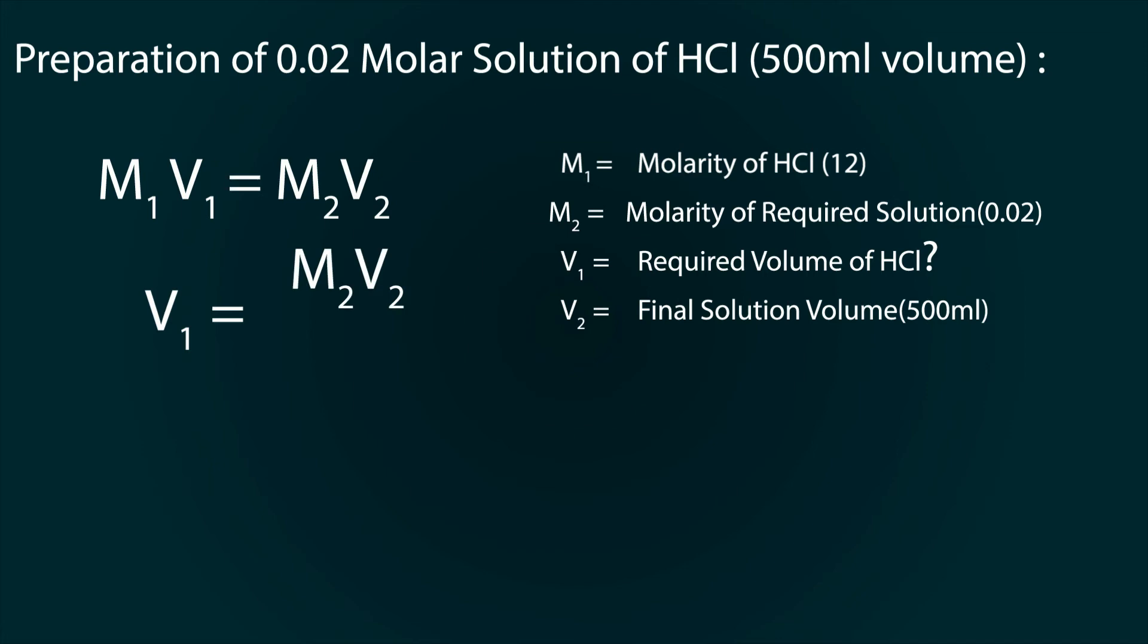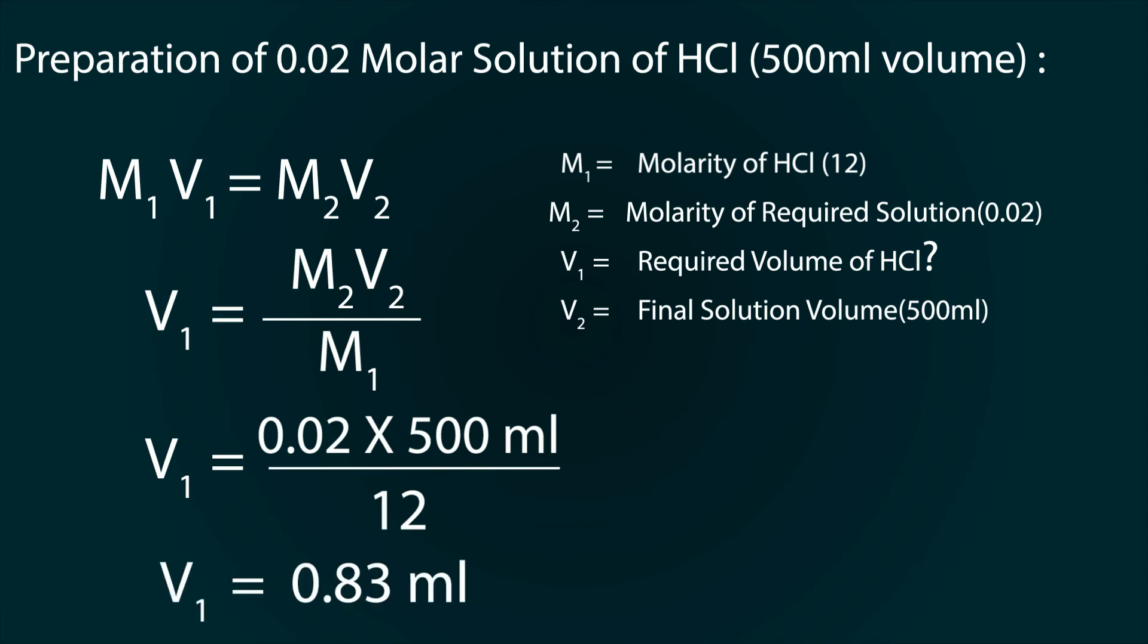V1 equals M2V2 divided by M1. By putting in the values: 0.02 multiplied by 500, divided by 12, we get our volume as 0.83 milliliters.